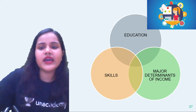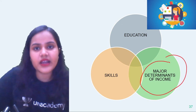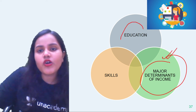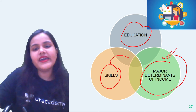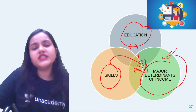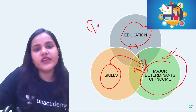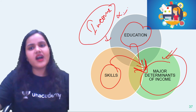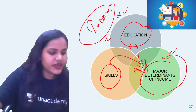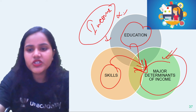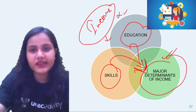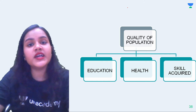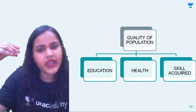Now, about the major determinants of income in any country: if people have education and skill, they are directly proportional to the income they receive. The more educated you are, the more skills you have, the higher return you will get. Coming up next in this chapter, we will study about the quality of population — covering education, health, and employment opportunities.